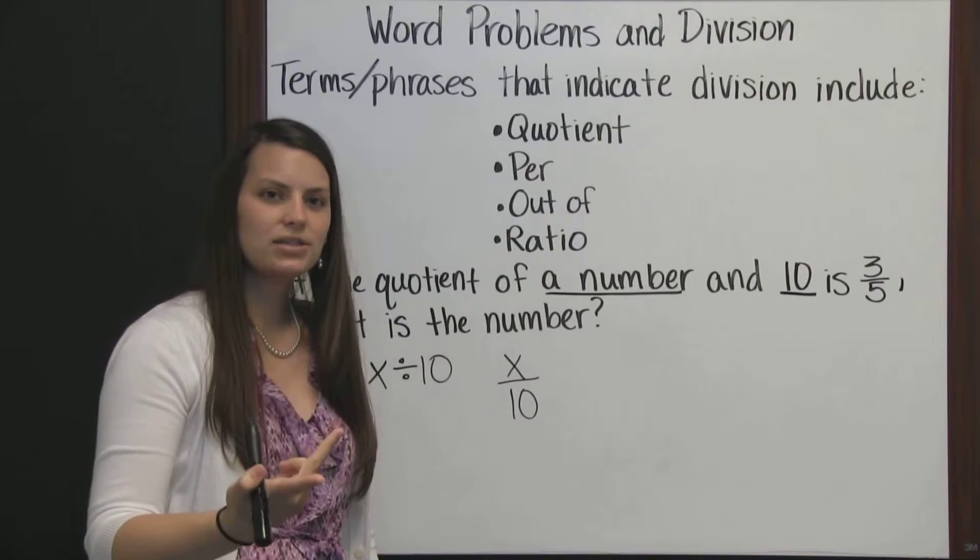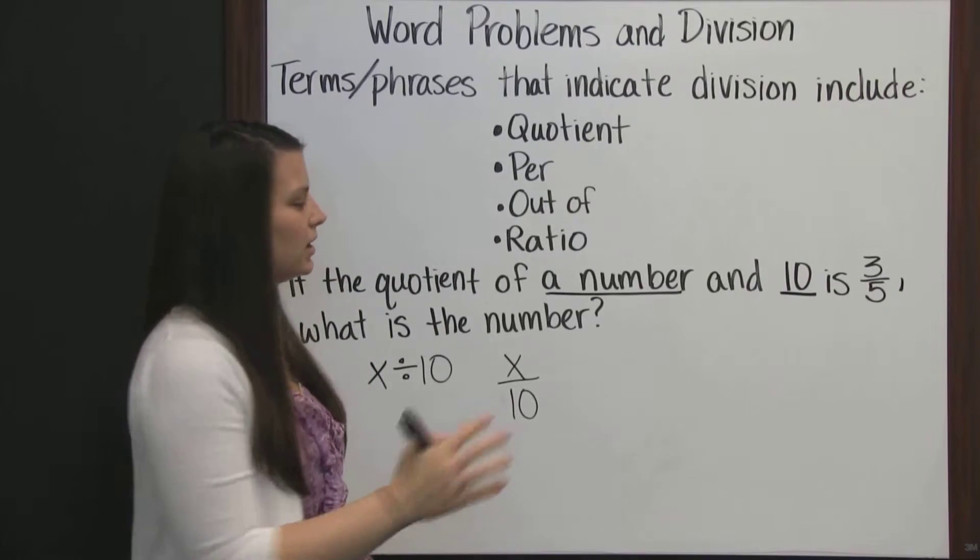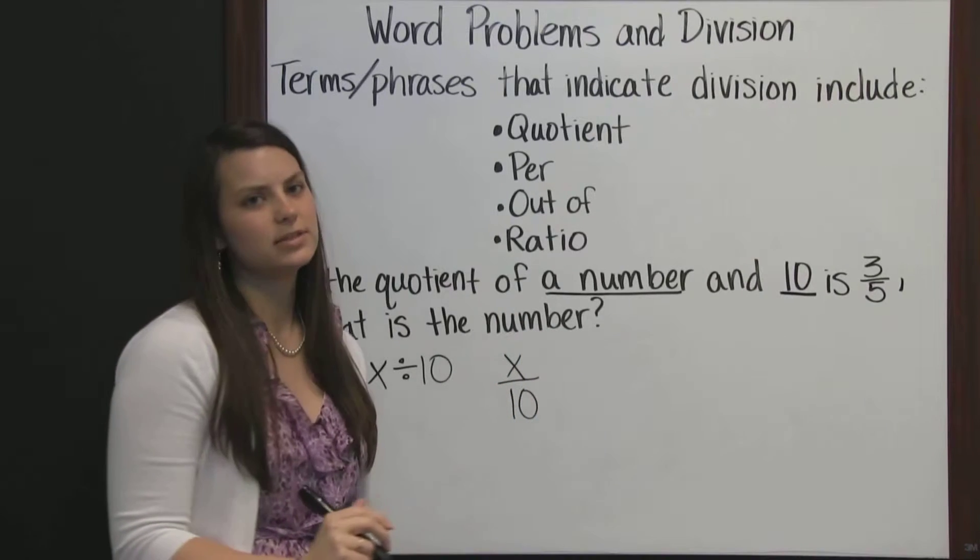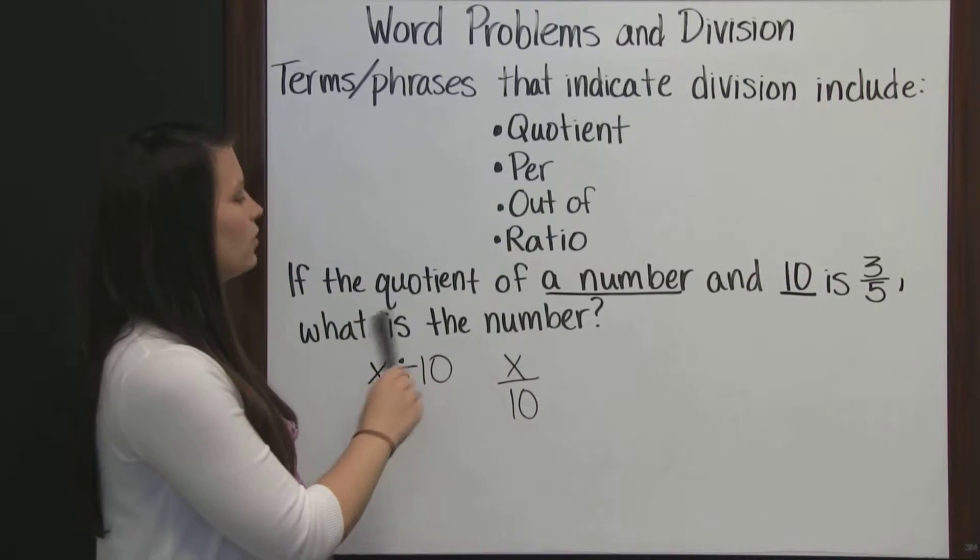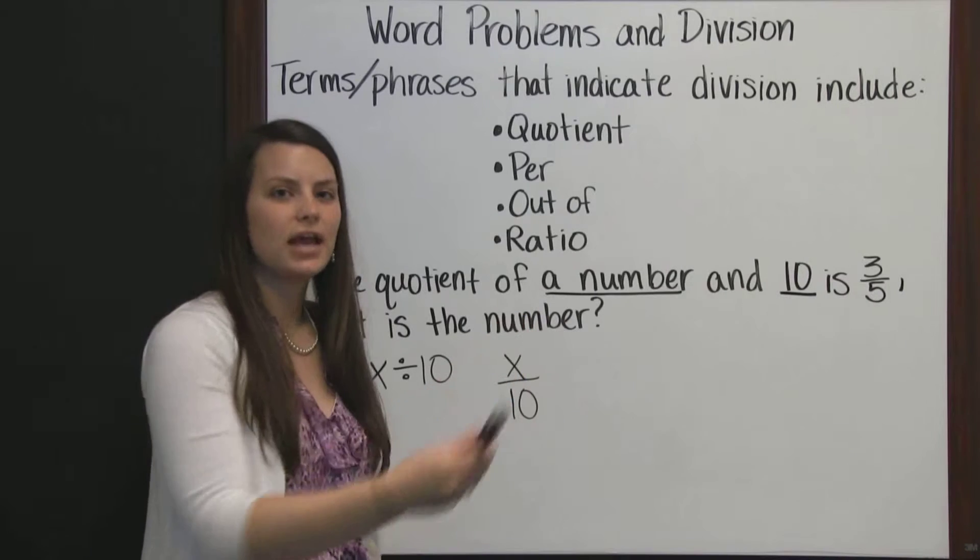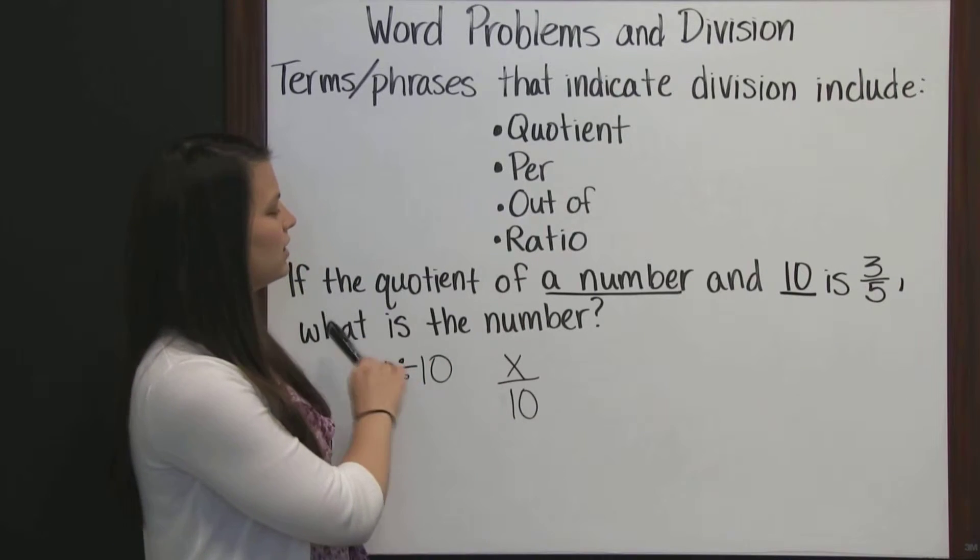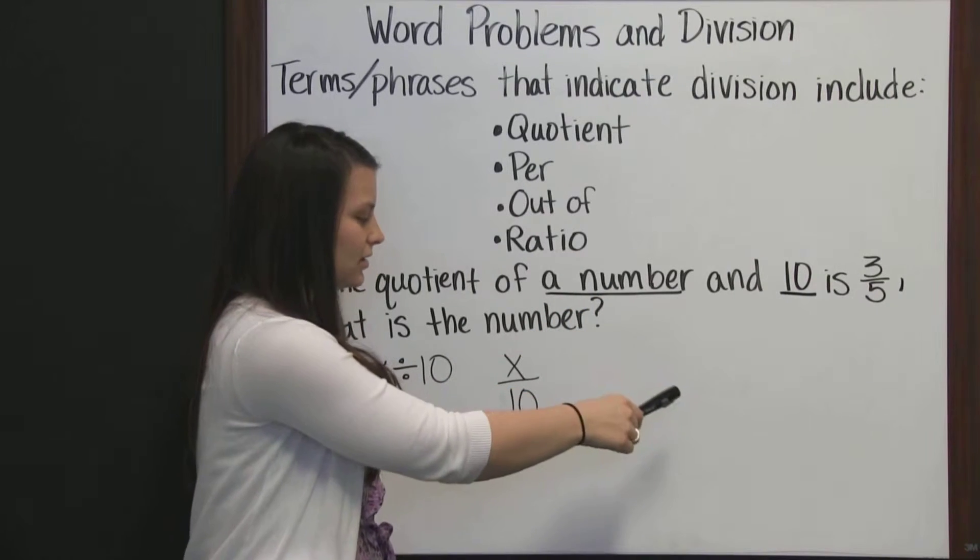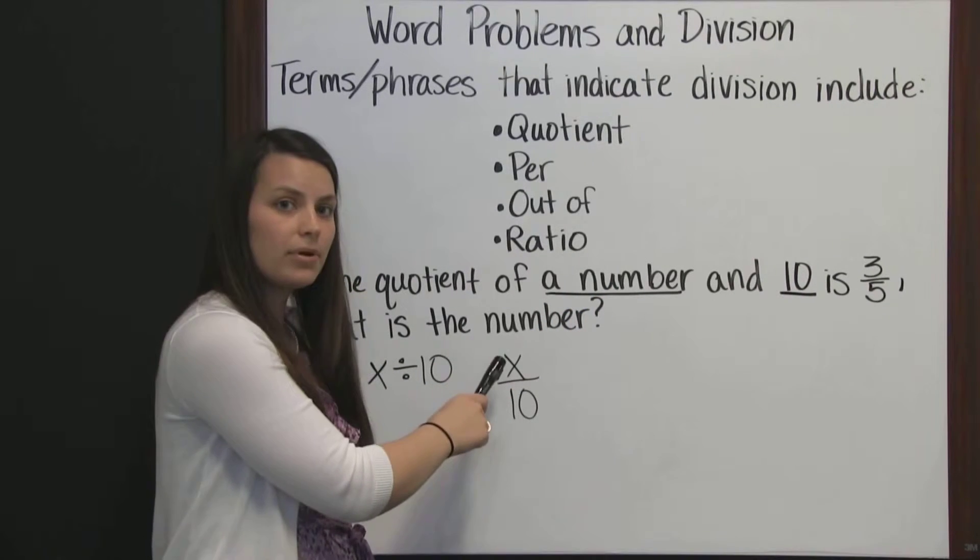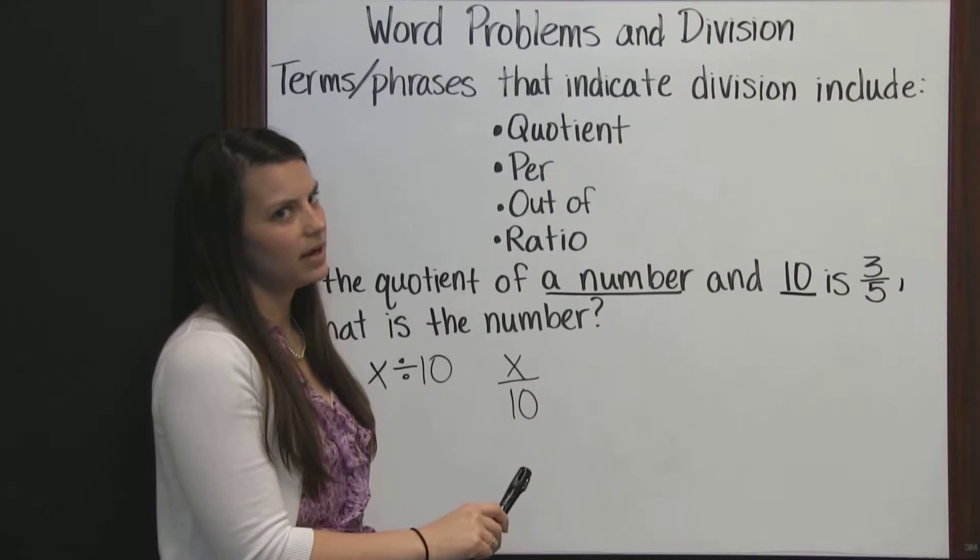If we reverse it to do ten divided by x, then that is not what is written here in this problem. That would be if the quotient of ten and a number. So order is very important. Since it was written, if the quotient of a number and ten, then we must have that number first divided by ten.